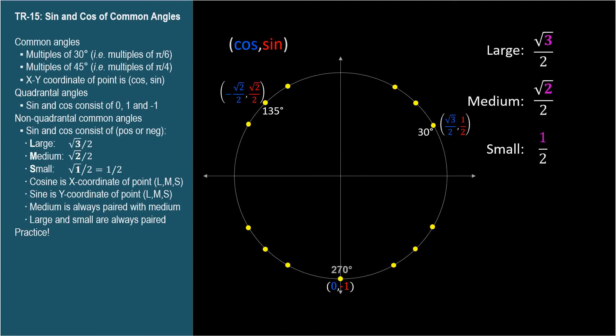Which angles have a cosine of negative one half? That's an x-coordinate of the small distance in the negative direction. So the sine can be positive or negative large distance. These correspond to angles of one-twenty degrees and two-forty degrees.